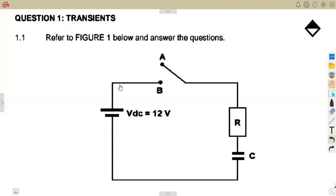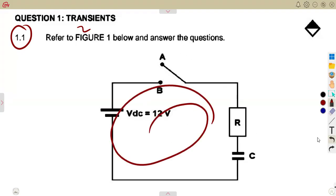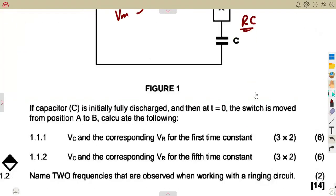Considering another exam concept from our April 2024 exam where we are given a transient. Question 1.1: refer to Figure 1 below and answer the questions. Figure 1 shows a DC voltage of 12 volts, the resistance, and the capacitor. That's an RC circuit that we are talking about in this case.